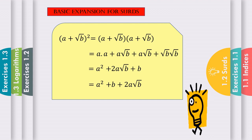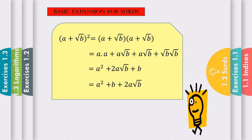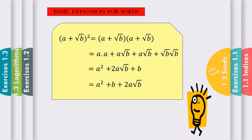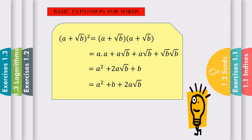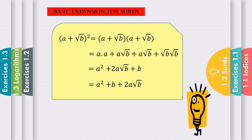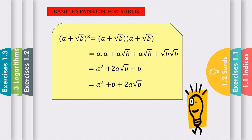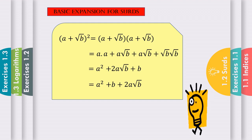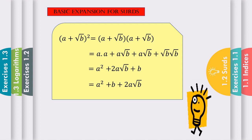Basic expansion for surds: if we have (a plus square root b) squared, we expand into two factors — (a plus square root b)(a plus square root b). Expanding: a times a, plus a times square root b, plus a times square root b, plus square root b times square root b. Simplifying, we get a squared plus 2a square root b plus b.